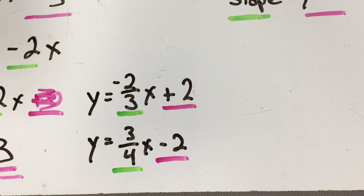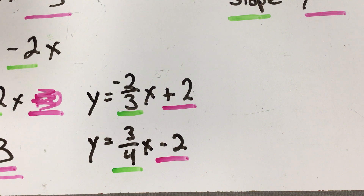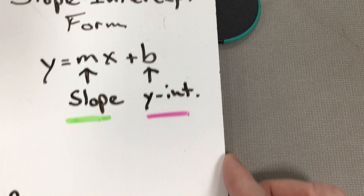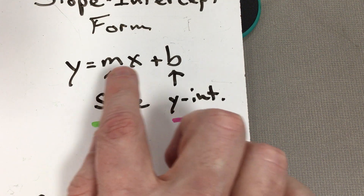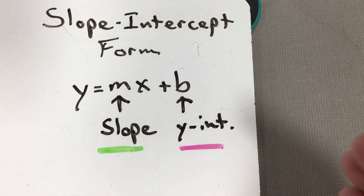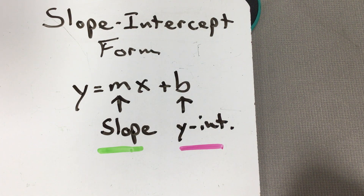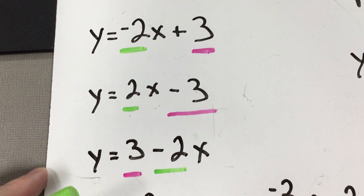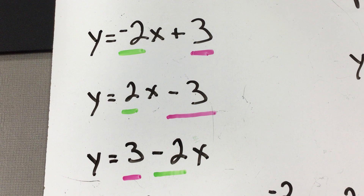These are all the examples you should need to successfully complete the first page of the packet. Make sure you watch this video if you have questions — it's not okay to just say you don't know and skip it. Ask questions, but first watch this video. You have to know that in slope-intercept form, the slope is always attached to x and the y-intercept comes after. You have to learn this — learning is a relatively permanent behavior process — and knowing that will allow you to complete these problems. Ask questions if you have them, and thanks.